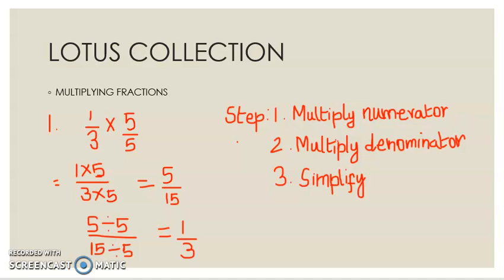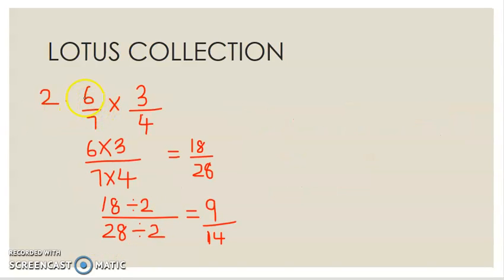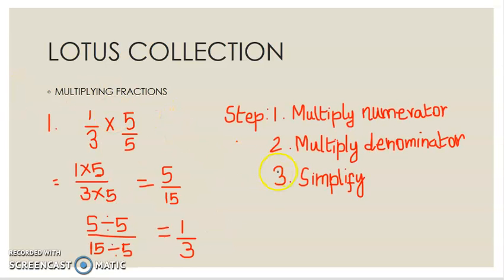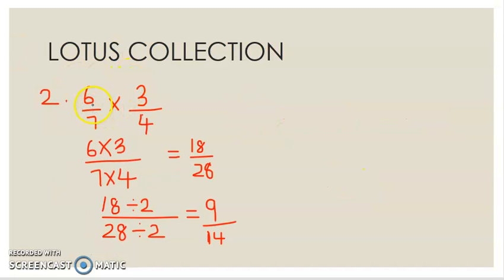Now we see another example. Second example: 6 by 7 times 3 by 4. This fraction multiplication, we have to apply the three steps. First is multiply numerator and multiply denominator, then third one is simplify. Now we apply that: 6 times 3, the numerator, then 7 times 4, denominator.